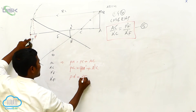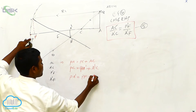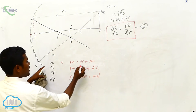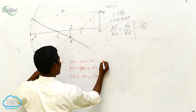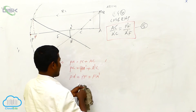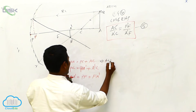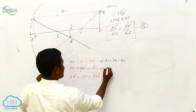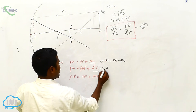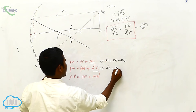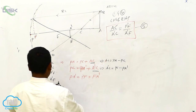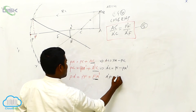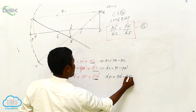These are the three equations. So here AC — can I get it? AC is equal to PA minus PC. Next, A dash C: PC minus PA dash. And A dash F is equal to PA dash minus PF.